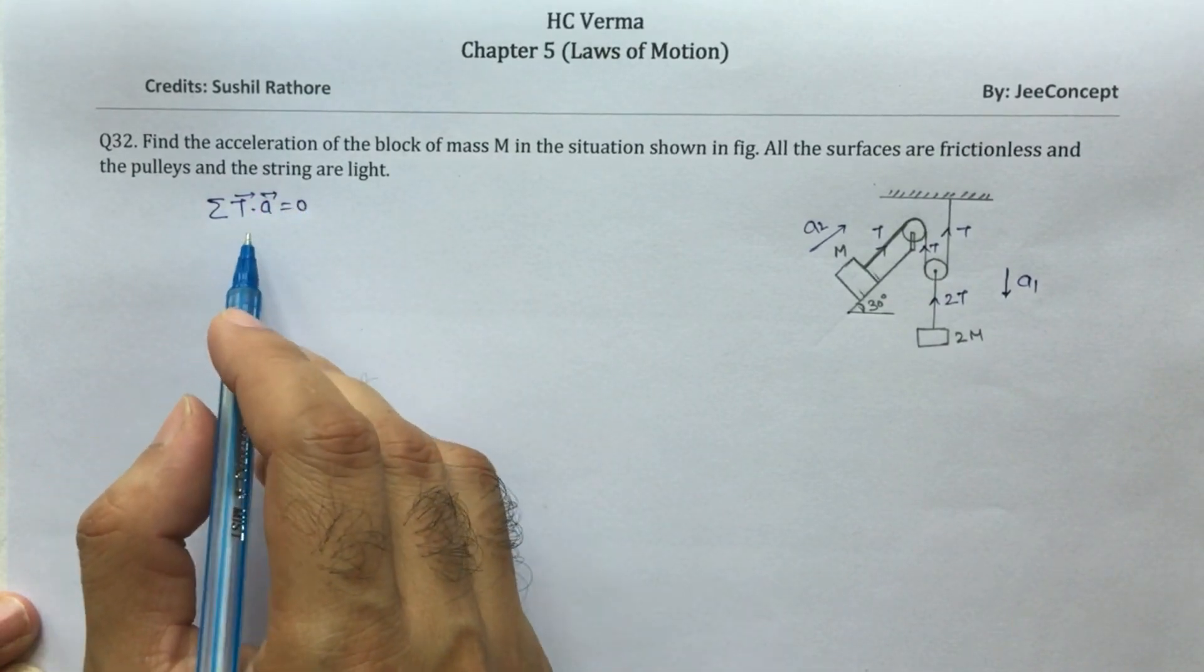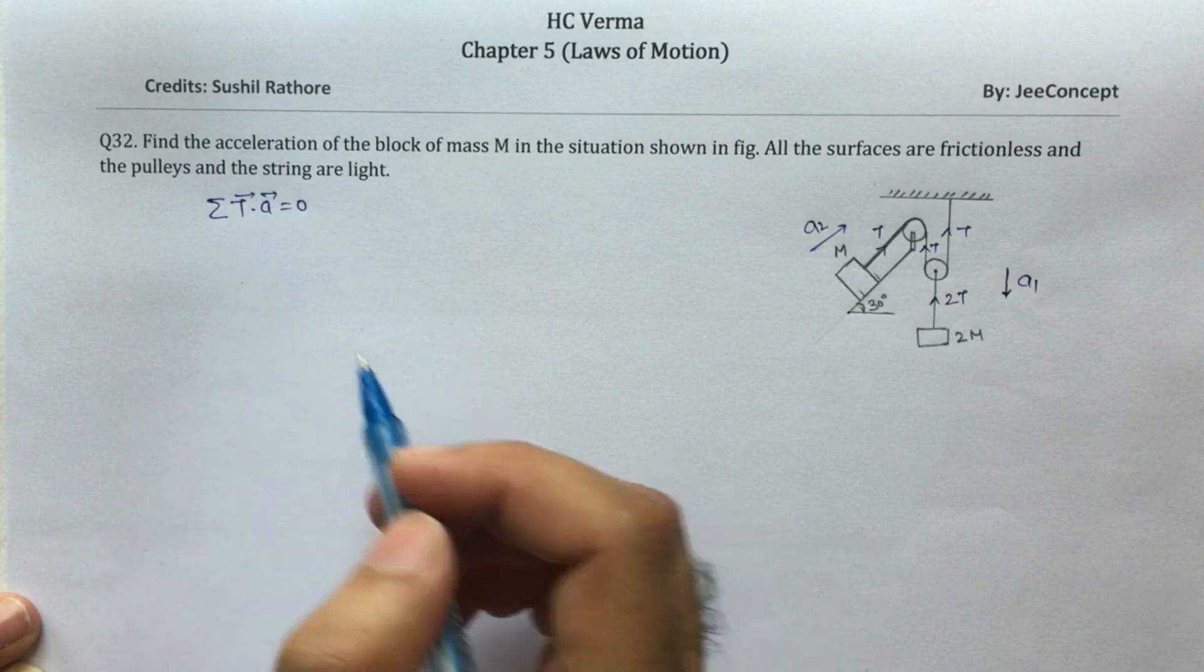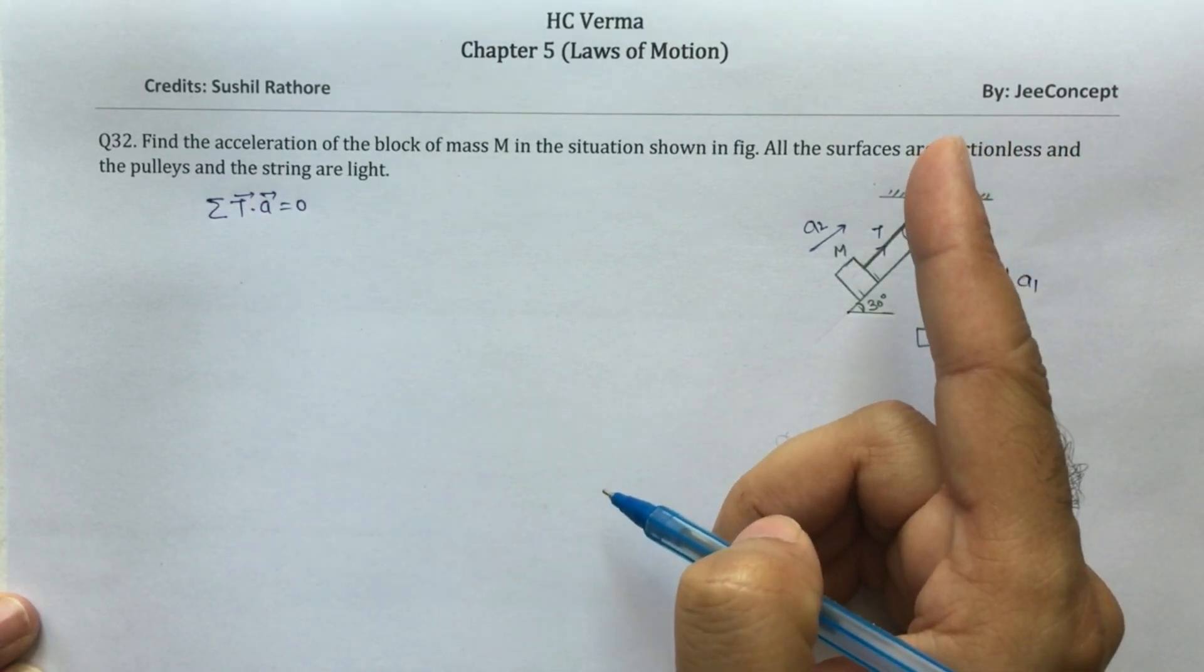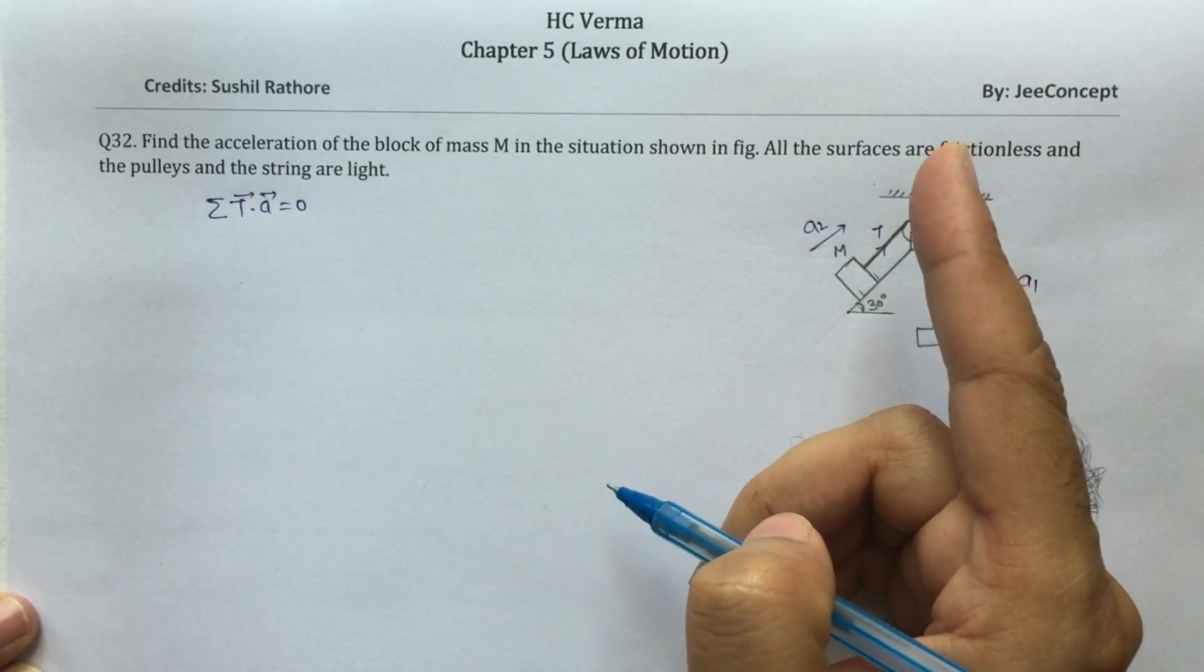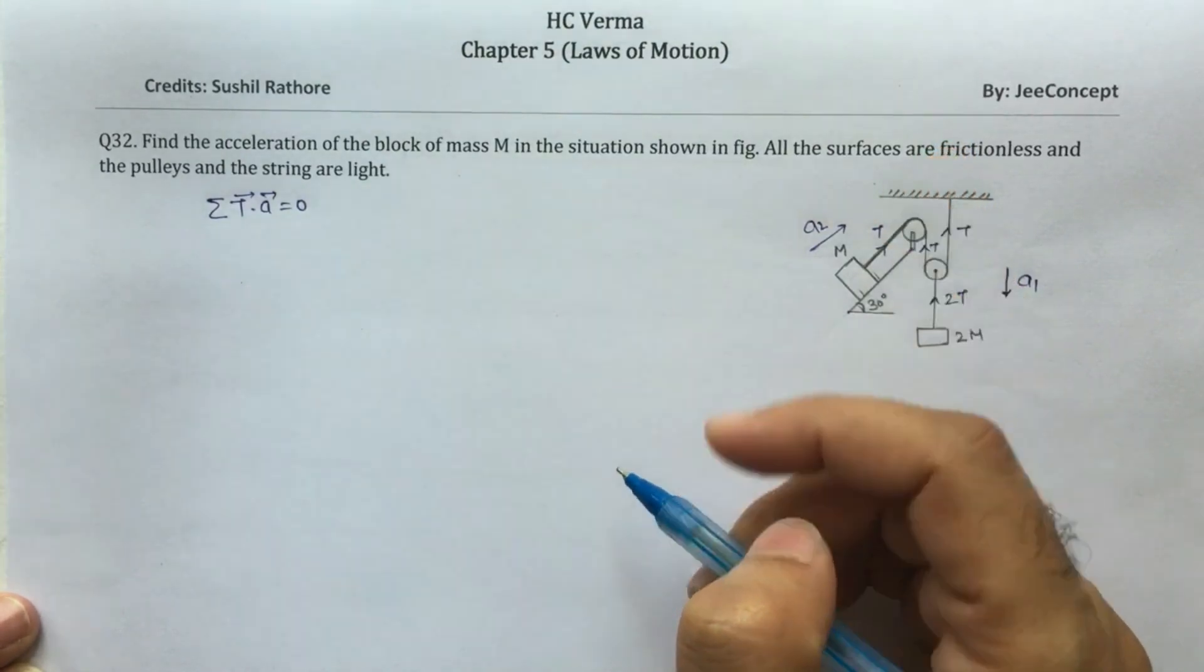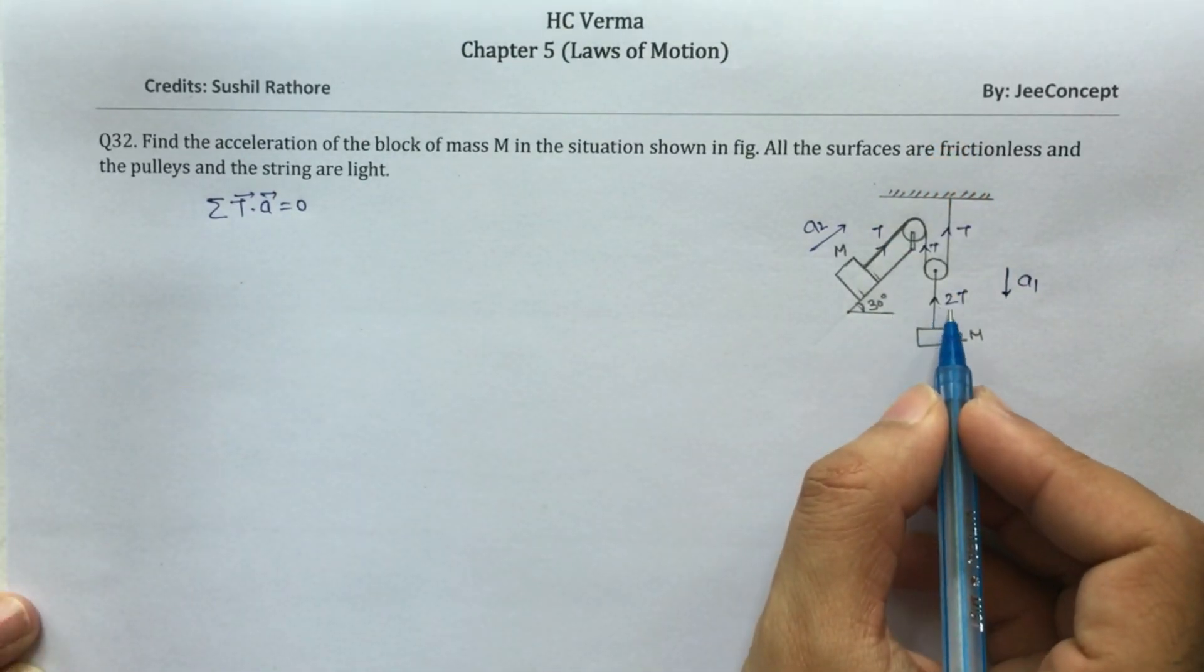So we will use the concept summation of T dot a is equal to 0. If you haven't watched my video on constraint motion just click on the link above, so you will get to know what is constraint motion and how to deal with it.